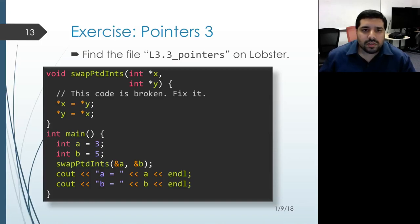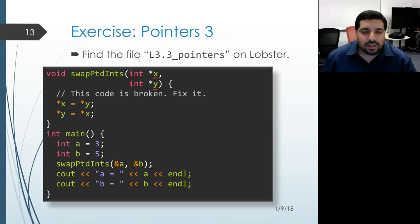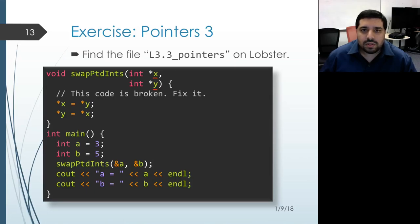In this exercise we have a function whose purpose is to swap the values that are being pointed at by the two parameters. We want to swap the values located at star X and at star Y. However, this code as written is broken. Go ahead and take a few minutes to walk through the code, see why it's broken, and figure out how to fix it.